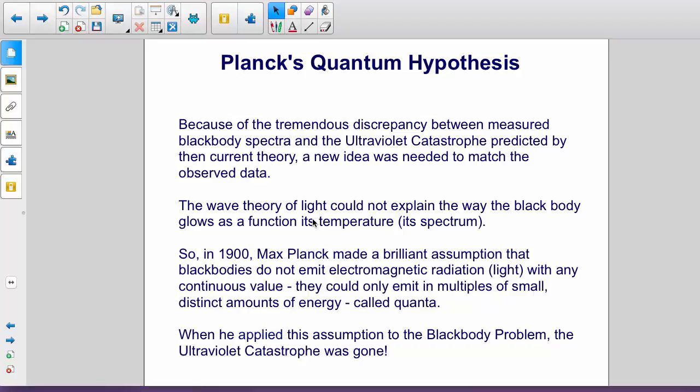Planck's quantum hypothesis. Because of the tremendous discrepancy between measured black body spectra and the ultraviolet catastrophe predicted by then-current theory, a new idea was needed to match the observed data.